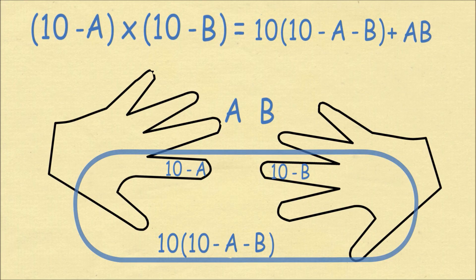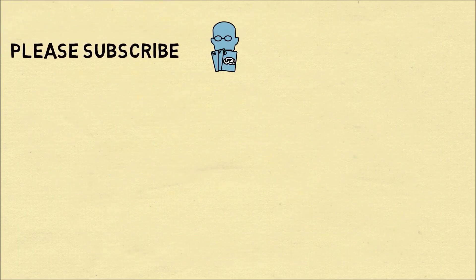And this is why the reason works. We're essentially doing the FOIL method of 10 minus A times 10 minus B, but using our fingers in a concrete method. So it's a totally valid technique, and it's pretty cool that it works.